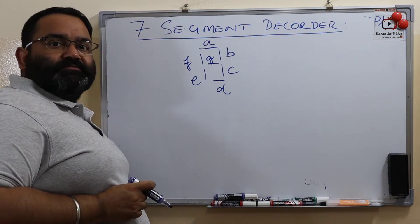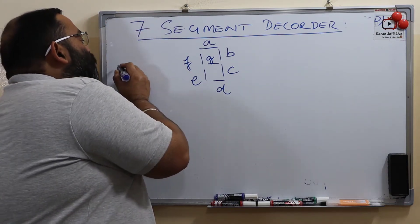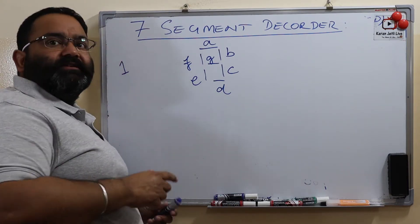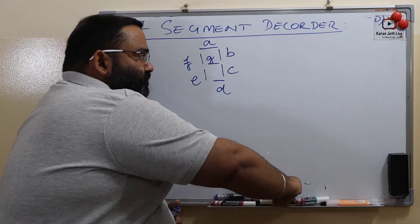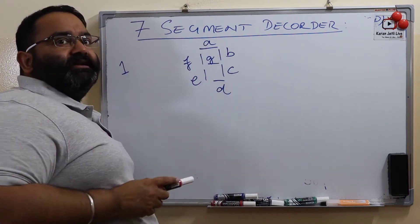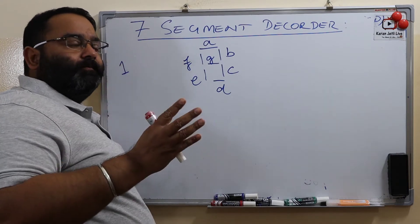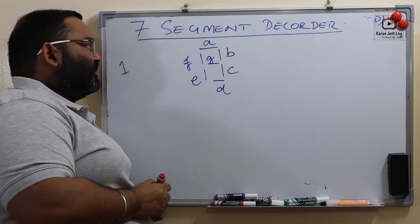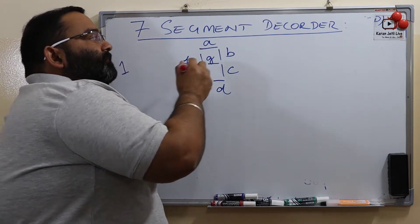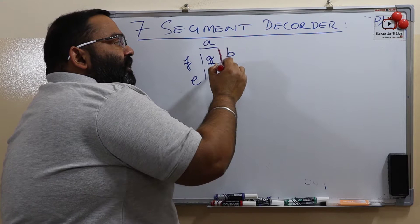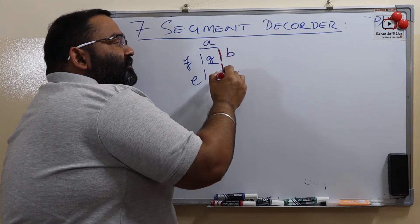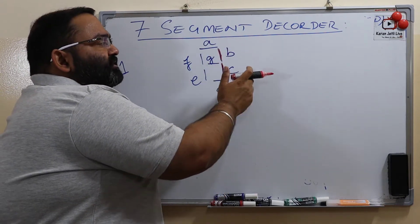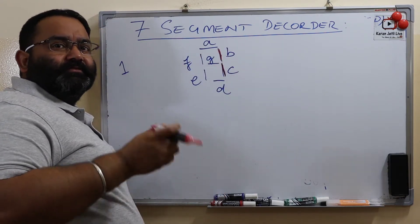Suppose I want to display decimal number 1. So what will my 7-segment decoder do? Out of these 7 segments, it will switch on some segments and switch off some other segments. To display one, it will turn on segment B and it will turn on segment C. Rest all segments will be off and you can see one on your screen.